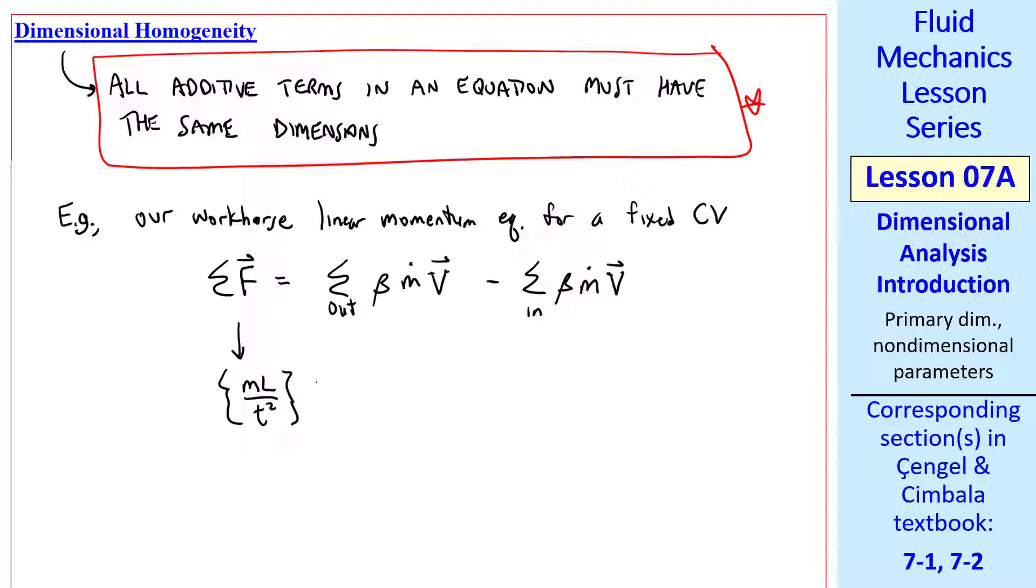Force is ML over t squared. Beta is dimensionless. Mass flow rate is M over t. And velocity has dimensions of length over time. This third term is the same as the second term. And note that sigma doesn't contribute anything to the dimensions. So this is also ML over t squared, as is the third term. So this equation is indeed dimensionally homogeneous.